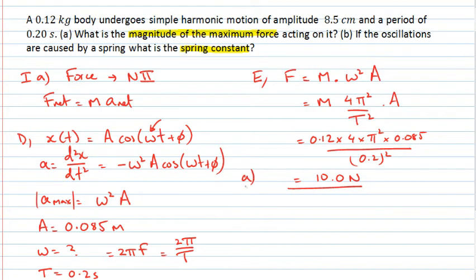So, that's the answer for part A. For part B, we're asked to find the spring constant if this happened to be a mass on a spring.